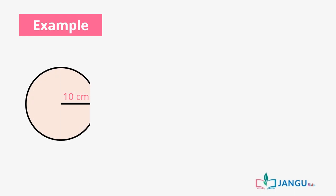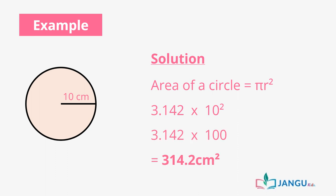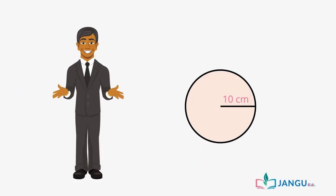Let's practice by calculating the area of this circle. From the image of the circle, you can see that the radius is 10 centimeters. We apply the formula pi r squared, which is 3.142 times 10 squared, and when calculated, that equals 314.2 centimeters squared. And that's how easy it is to calculate the area of a circle with a known radius.